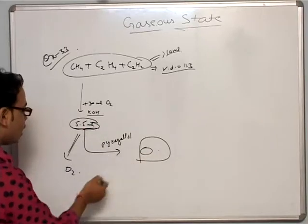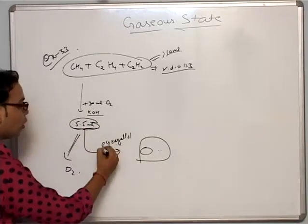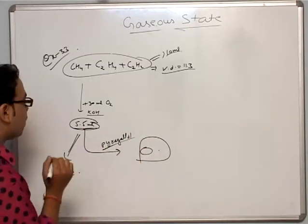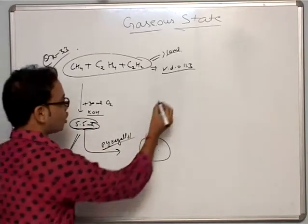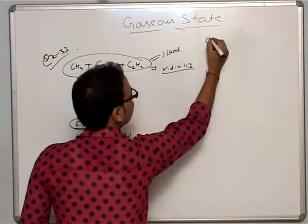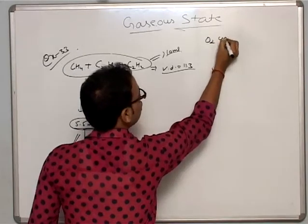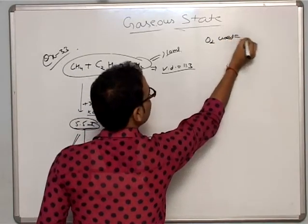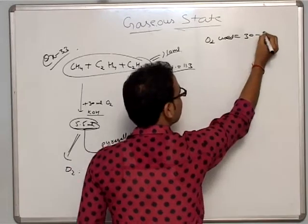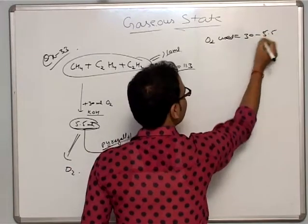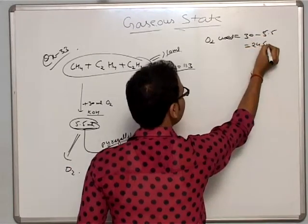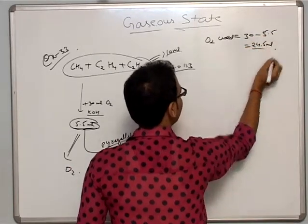We know this because everything was absorbed by the Pyrogallol solution. This means: Oxygen used equals 30 minus 5.5, which equals 24.5 ml.